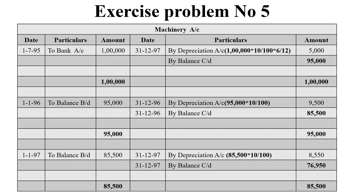So 95,000 is brought down as the balance for the second year. We calculate 10% depreciation on 95,000: that is 95,000 × 10/100, which equals 9,500 rupees.